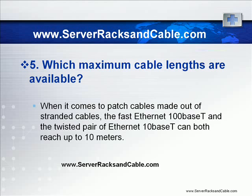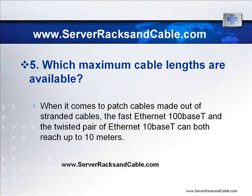Which maximum cable lengths are available? When it comes to solid UTP, fast Ethernet 100Base-T can reach up to 100 meters, while twisted pair Ethernet 10Base-T can also reach up to 100 meters. When it comes to patch cables made out of stranded cables, fast Ethernet 100Base-T and twisted pair Ethernet 10Base-T can both reach up to 10 meters.